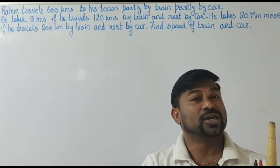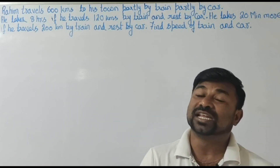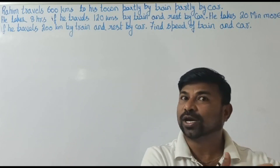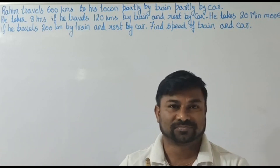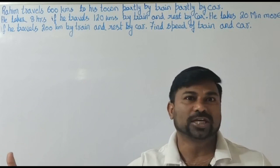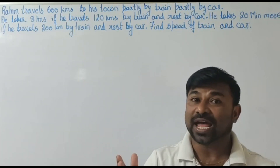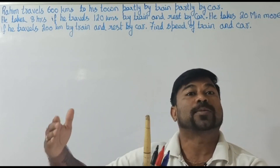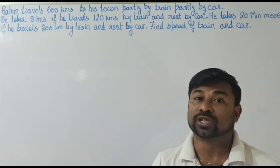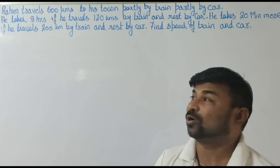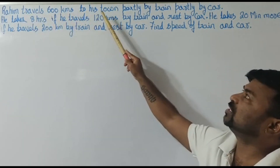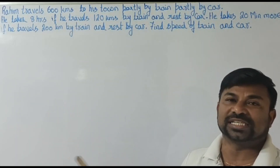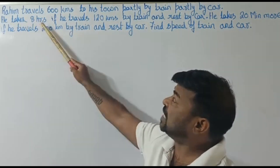Since he is using two vehicles, the speed of the two will be different — the speed of the train is different from the speed of the car. The total distance he travels is 600 kilometers. The distance traveled by train and the distance traveled by car are different, but if you add both, it totals 600 kilometers. That's what the problem states.